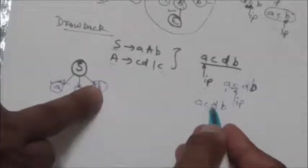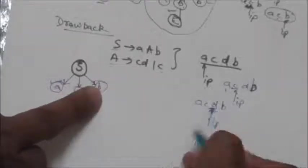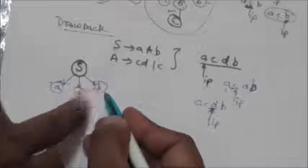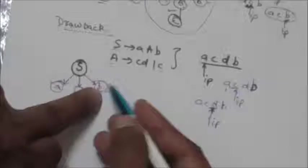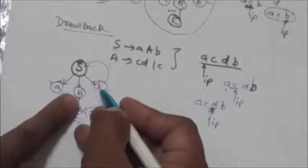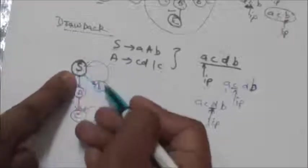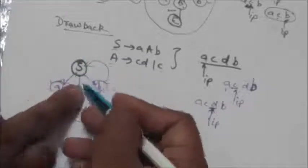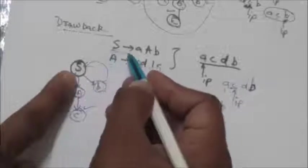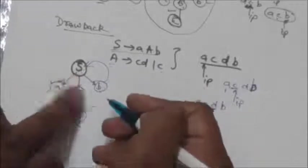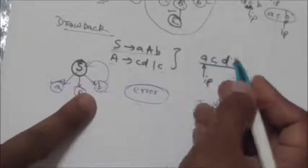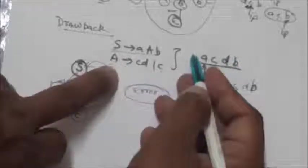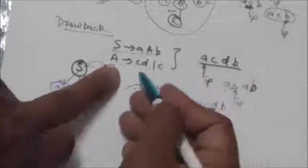The next leaf of the tree is 'b' but the input pointer points to 'd' — there is a mismatch. Since 'b' is a terminal symbol, we cannot expand it. We need to backtrack to the parent node S and try another production rule for S, but there is no other production rule for start symbol S. So we get an error — according to the recursive descent parser, the string 'acdb' is syntactically incorrect. But this is not true; this string can actually be generated from this grammar.